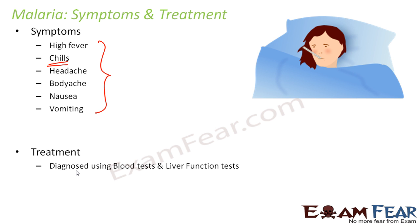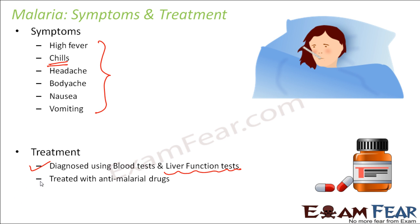For any treatment, diagnosis must come first. Malaria is diagnosed using blood tests and liver function tests, because a lot of changes happen in the liver — the RBCs are ruptured and the sporozoids that enter the body go directly into the liver cells. Once diagnosed, malaria can be treated with anti-malarial drugs, which are available in the market and can treat it completely.